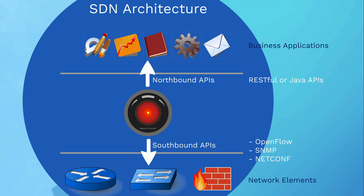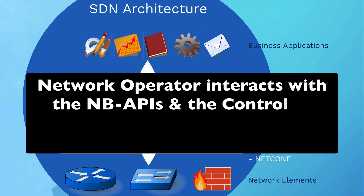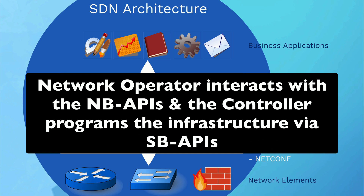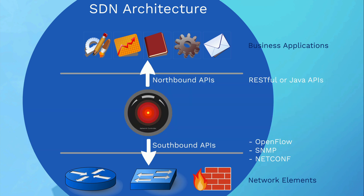The way the controller talks to those devices is through southbound APIs, using protocols like OpenFlow, SNMP, or NetConf. The network controller is in charge of talking to everybody. As a network admin, we define what we want the network to do through the business application. The controller then makes API calls down to the network elements, asking whether there are resources available — routing, switching, firewall, or server capacity — and translates business intent into low-level technical details.